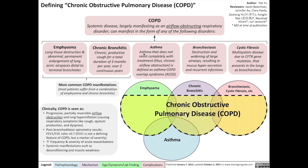The third manifestation of COPD is actually asthma — an asthma variant — specifically asthma that does not remit completely with treatment, so the patient has chronic airflow obstruction. This condition is also known as asthma-COPD overlap syndrome, or ACOS.